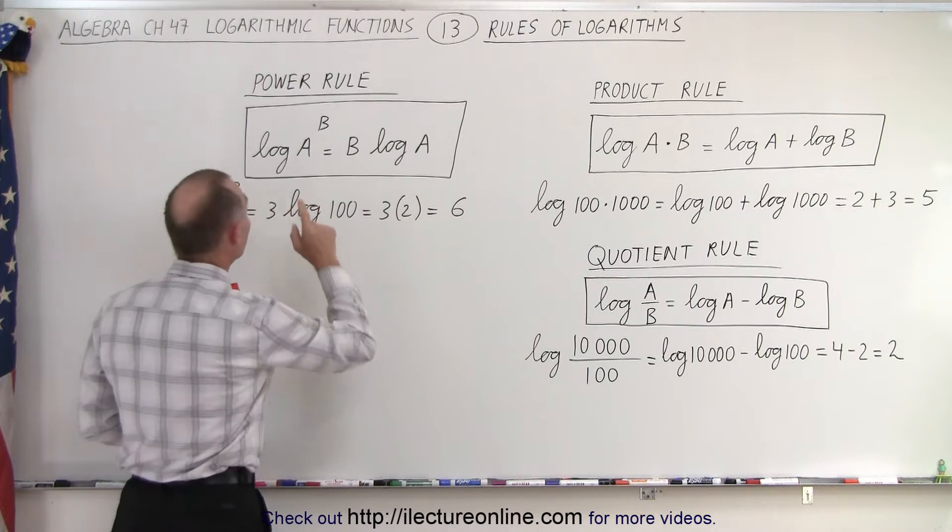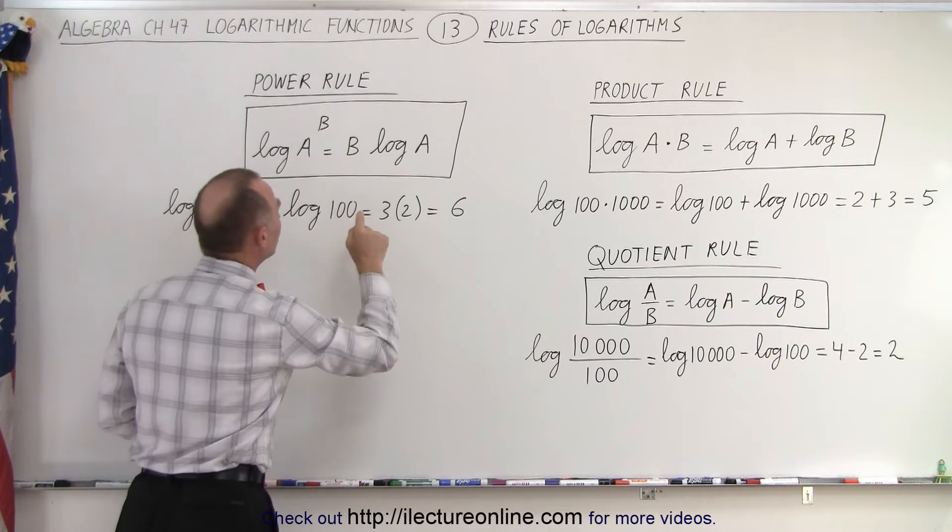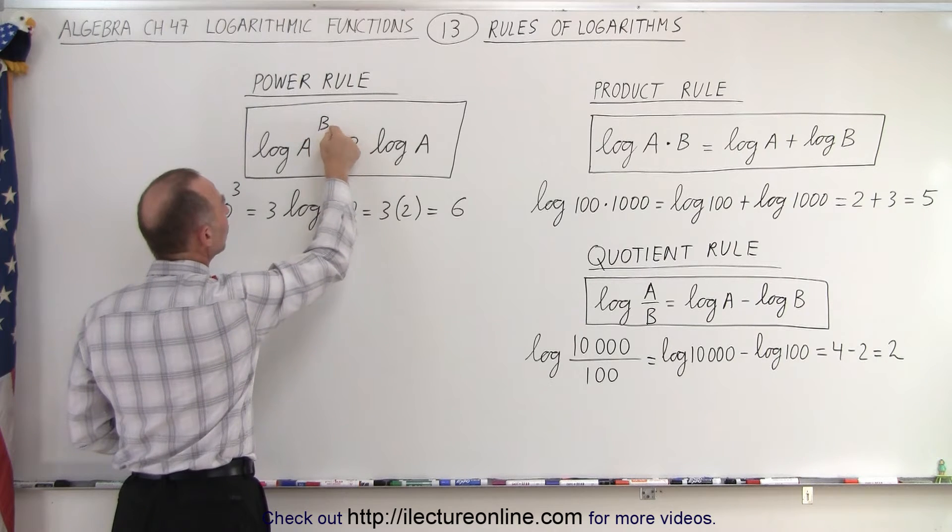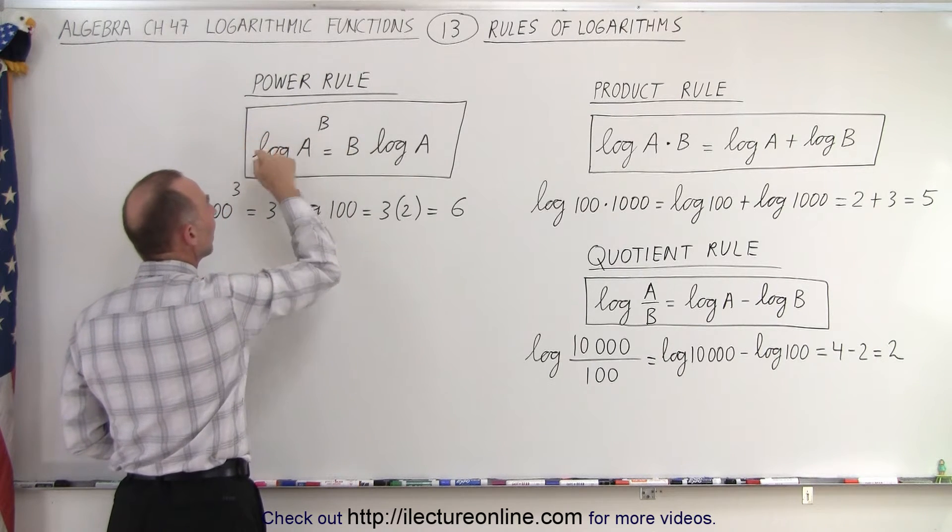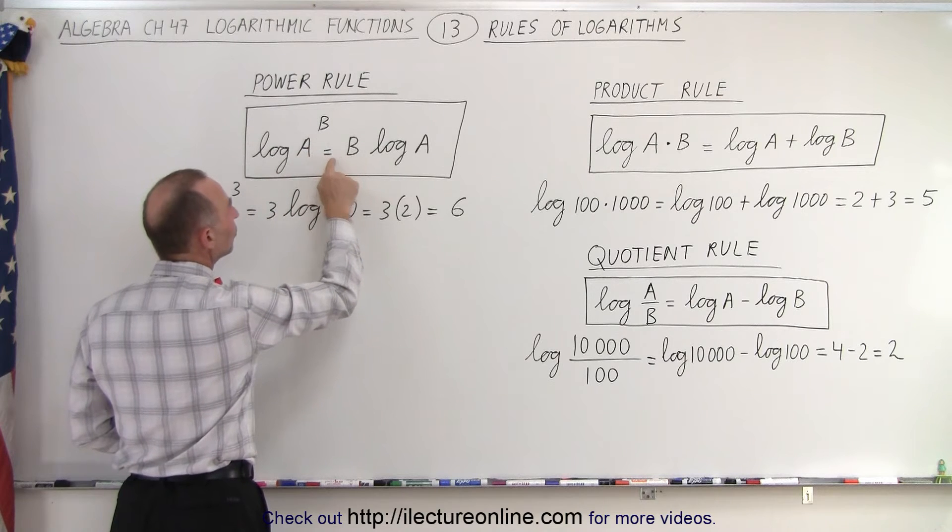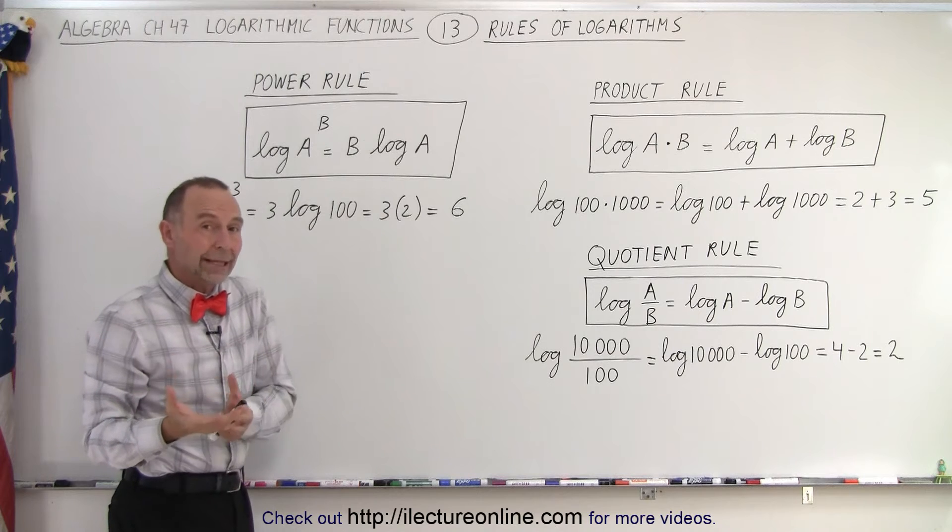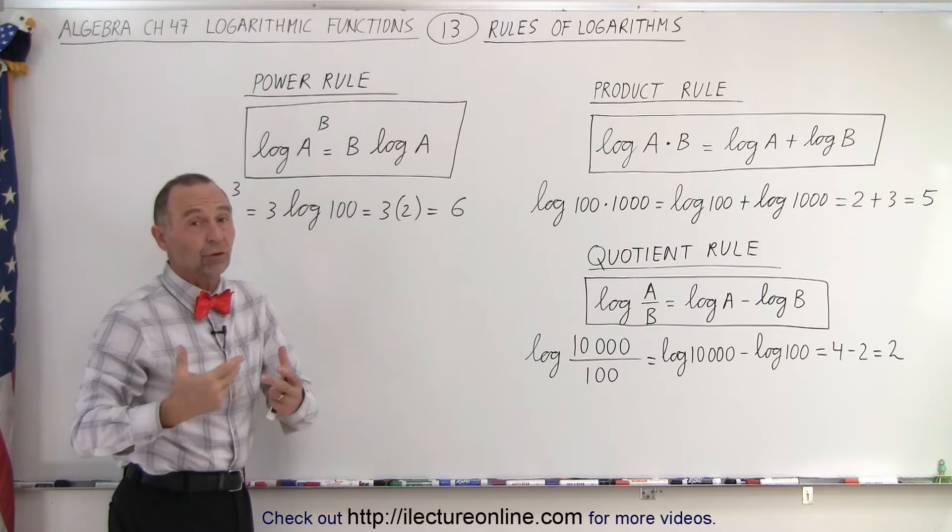The third rule, the power rule. We have the log of A raised to the B power. Notice the B, which is an exponent, can be put in front and made into multiplication. So the log of A to the B power is equal to B times the log of A. It turns a power into a product. Again, that's easier to work with.